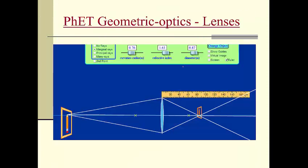Calculating the focal length of a lens is more complicated than for mirrors. For a lens, the focal length is not simply half the radius of curvature. In this demo, we can see a converging lens forming a real image behind the mirror — real and inverted, upside down compared to the object.